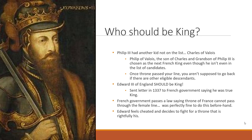The immediate cause of the war surrounds who should be French king. Philip III had another child, Charles of Valois, whose son Philip of Valois was chosen as the next king of France. However, Edward III of England really should have been eligible. Because once the throne passed through a line, you couldn't go back if other eligible candidates existed—and Edward III was one. In 1337, Edward III sent a letter to the French government declaring himself the true king of France.